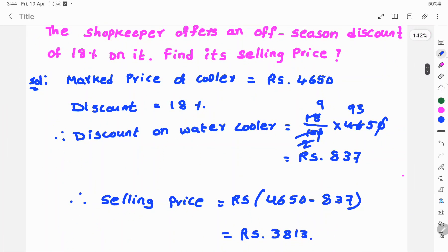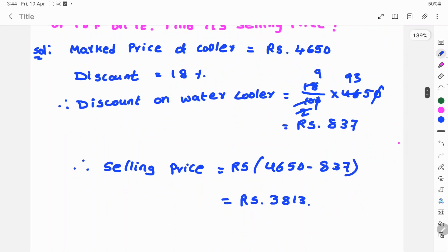Therefore, selling price is equal to market price minus discount, that is Rs. 4,650 minus Rs. 837, which equals Rs. 3,813. This is the selling price and this is the solution.